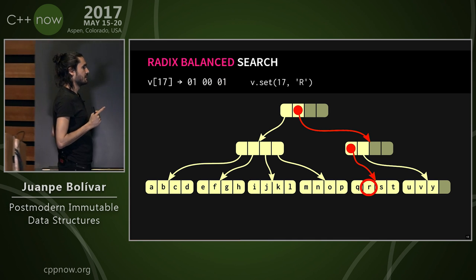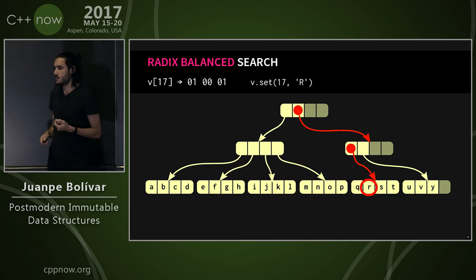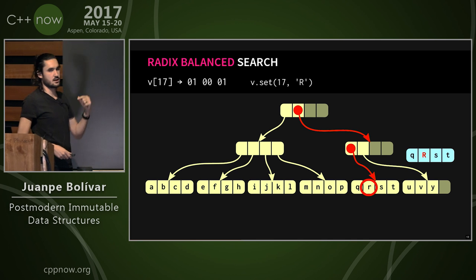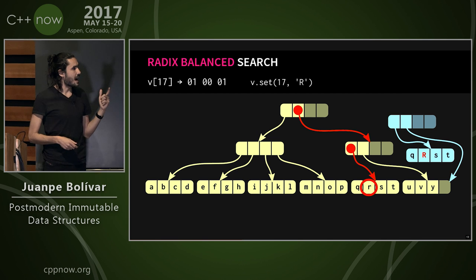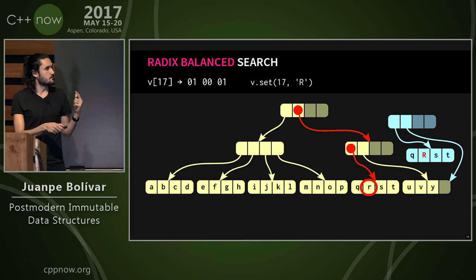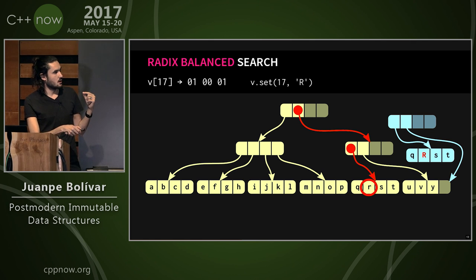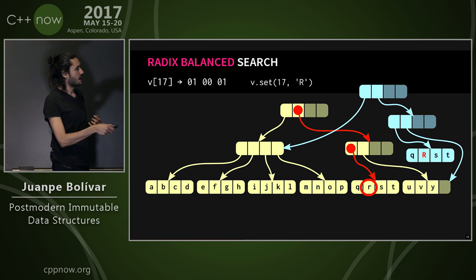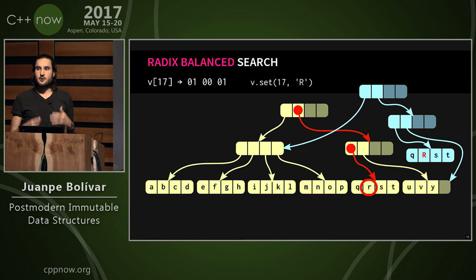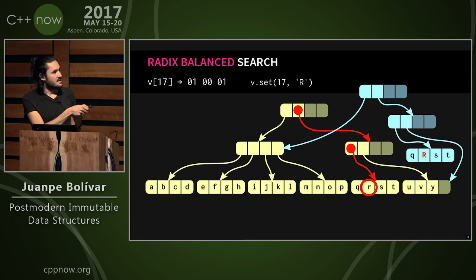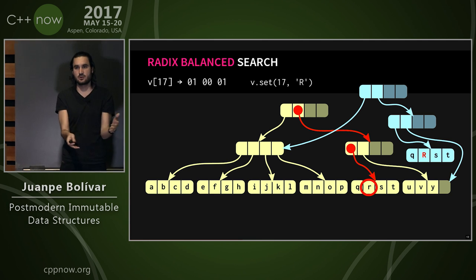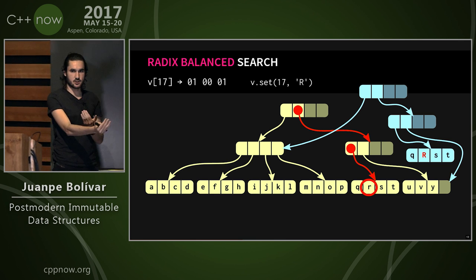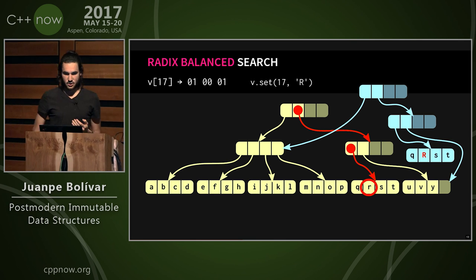When we want to update an element to get a new version of the vector, we traverse down to the element and start copying nodes back up the tree. We copy the chunk containing the element, then copy the parent node pointing to the new chunk while keeping other pointers unchanged, then copy the root. We end up with a new tree where only one path was copied — the rest is shared between the two versions. This is how we balance structural sharing against the amount of copying per update, controlled via the branching factor.